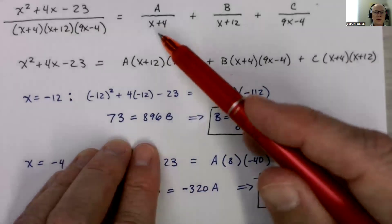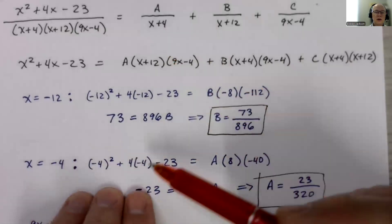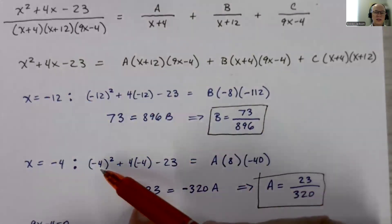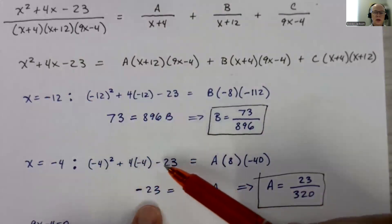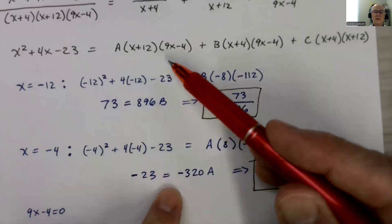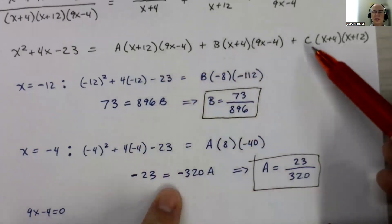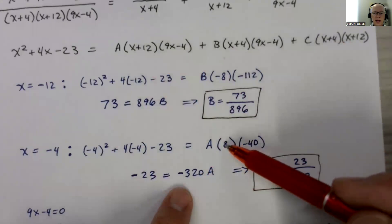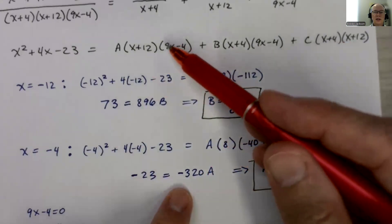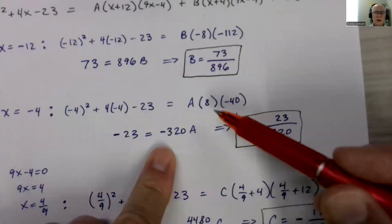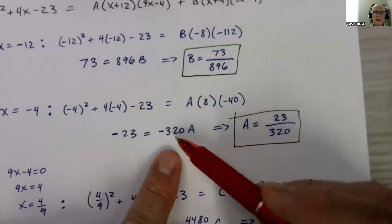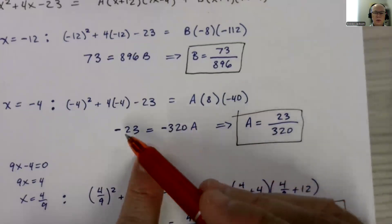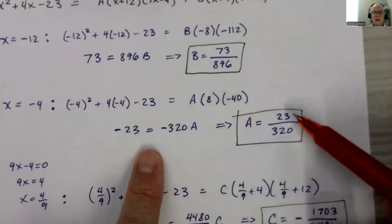Notice I can also plug in x equal negative 4. I'm not sure why I didn't do that first, but if I plug in negative 4, over here, I get this expression here, which, notice this is 16, and this will be negative 16, so that goes away. I just have negative 23. On this side, when I plug in negative 4, now notice this term is now 0, and the last term. And here I just get negative 4 plus 12 is 8, and then negative 4 times 9 is negative 36 minus 4 is negative 40. So I get that negative 23, 8 times negative 40, negative 320A. I get those being equal. I can solve for A by dividing by negative 320. Remember, negative divided by negative is a positive. So there's the value of A.